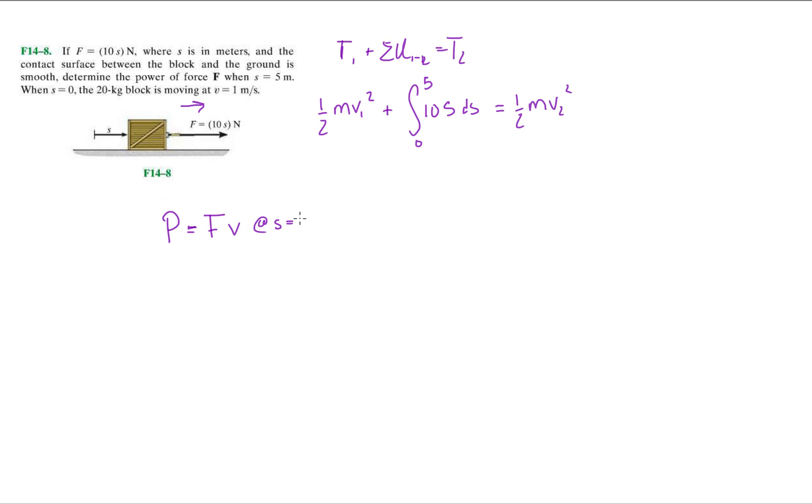So it's just gonna be F V at s equals 5 meters. All right, so I just plug the numbers in. Let's see, so we have one-half, the mass of this is 20 times 1 squared, plus let's do the integral.